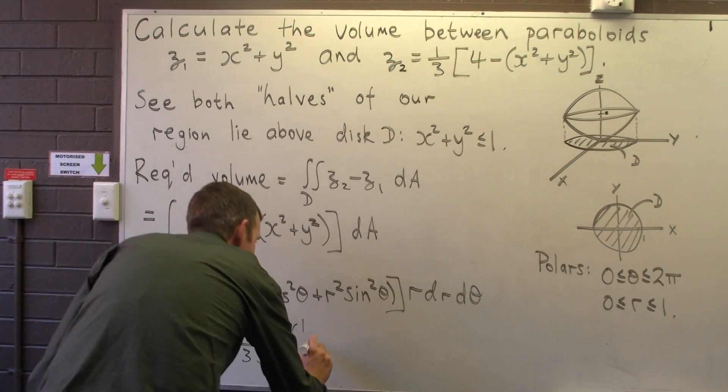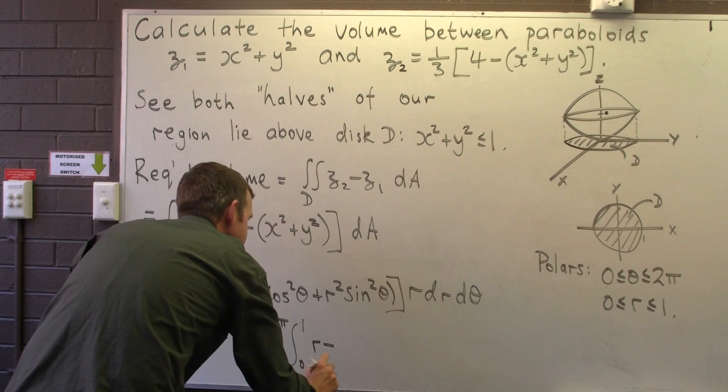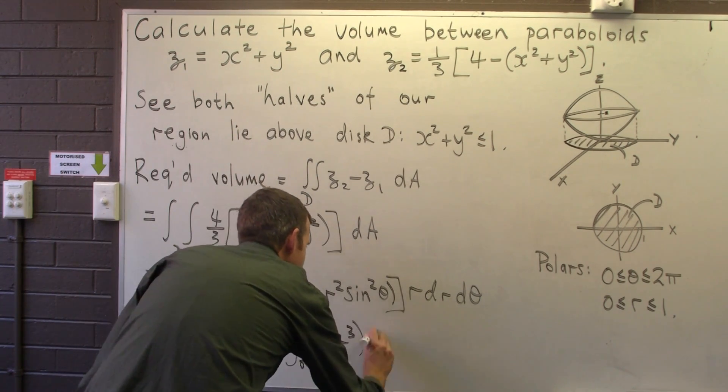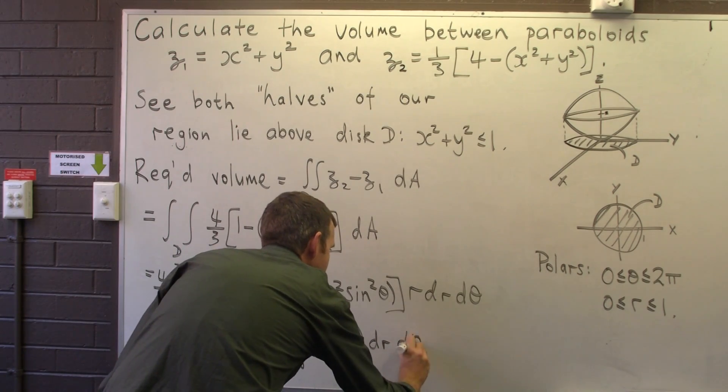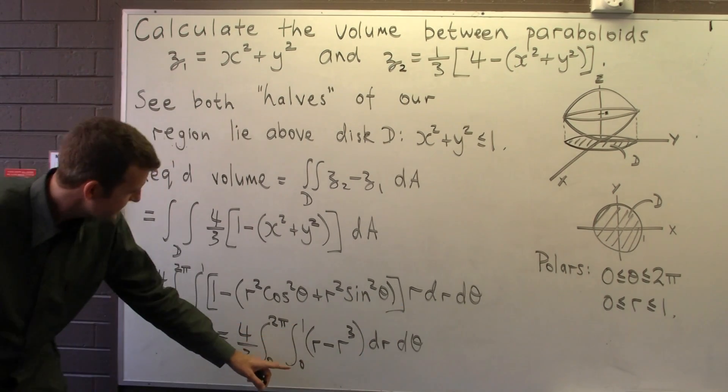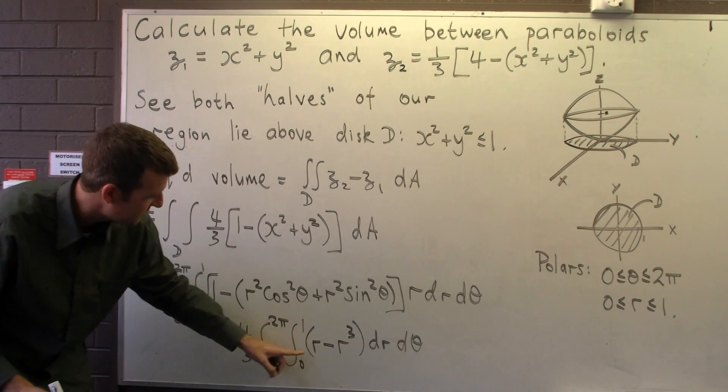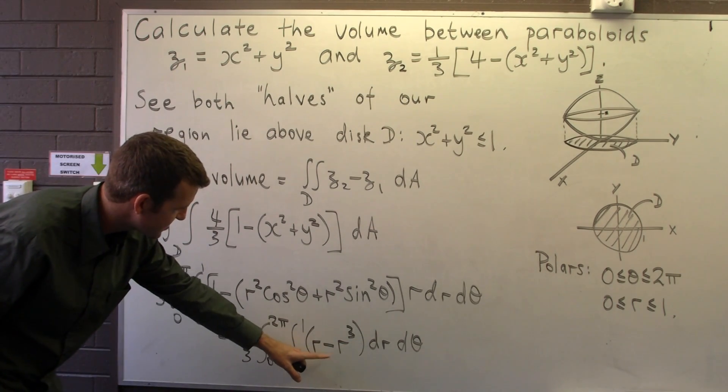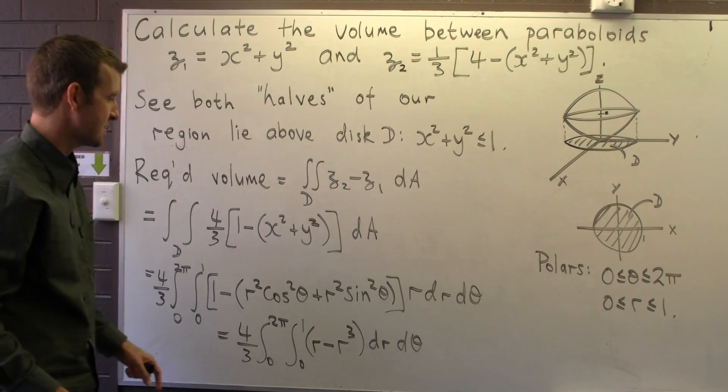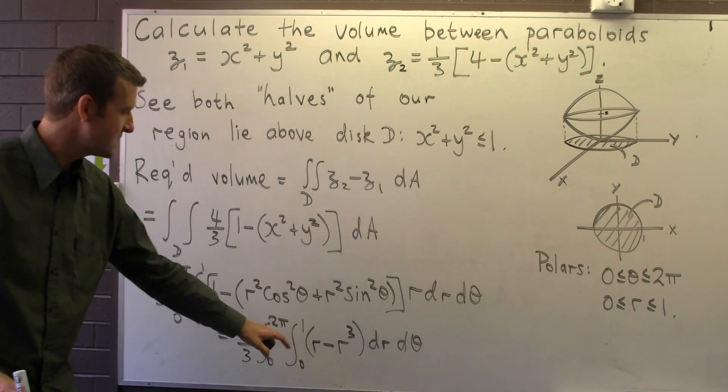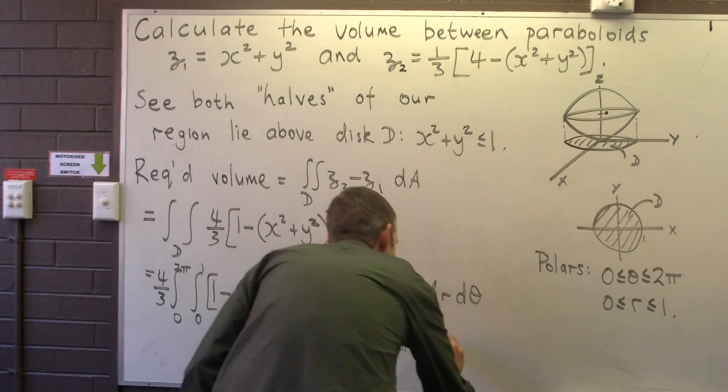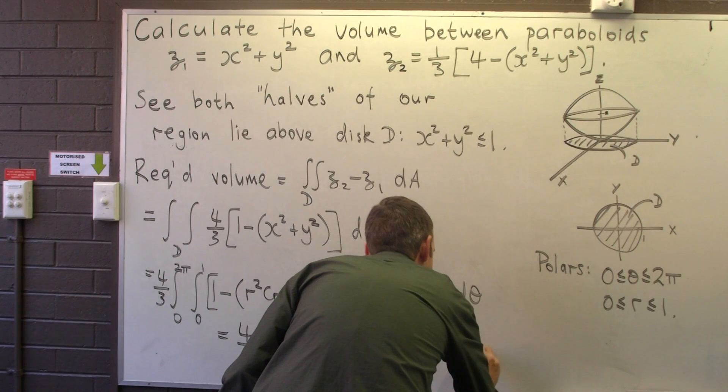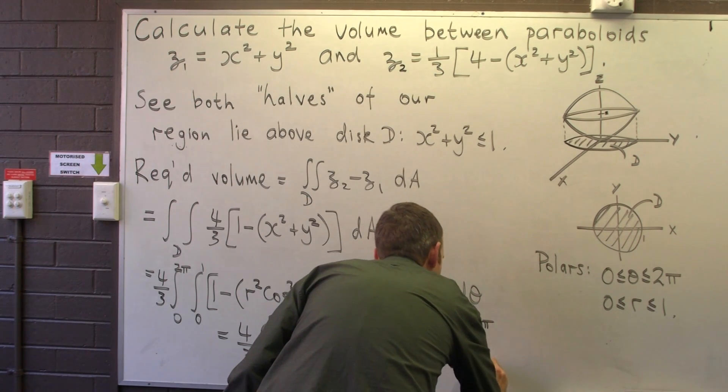I'm going to get r minus r cubed. Let's do the inside integral first, so we integrate with respect to r. I'm going to get a half r squared minus a quarter r to the power 4, and when we sub in 1 and 0 it'll just leave us with 1 quarter.